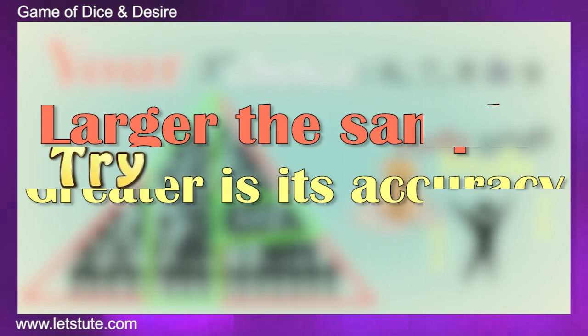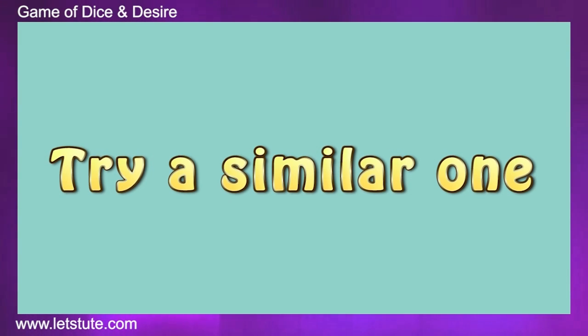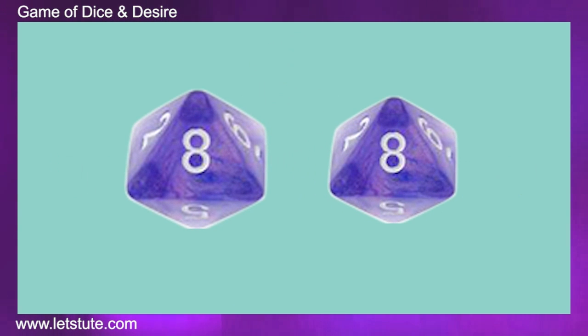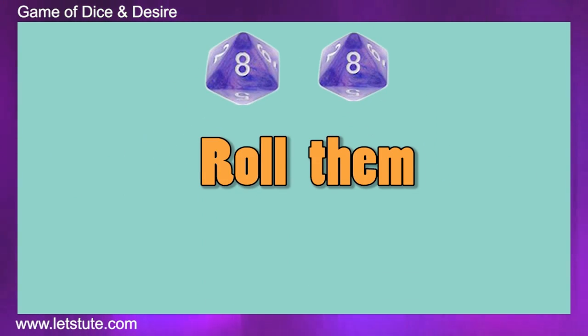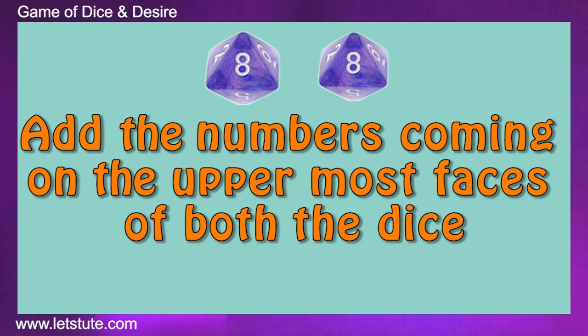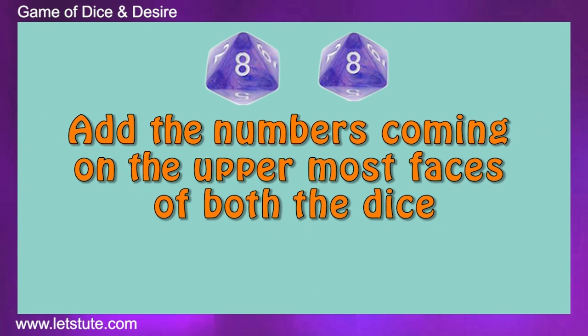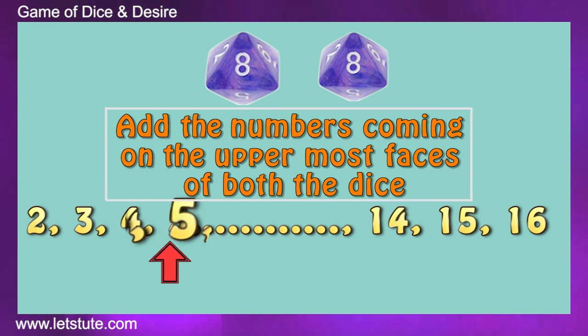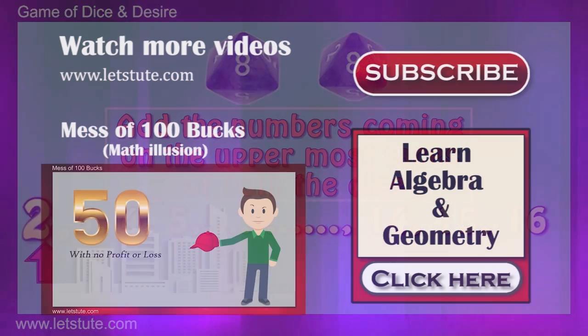Before we end up this session, try a similar kind of question. We have 2 dice but with 8 faces, written 1 to 8. We'll roll them together and add the numbers coming on the uppermost faces. So which resulting number would have the highest probability of occurrence?